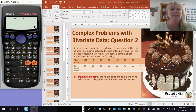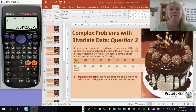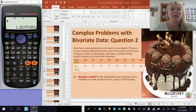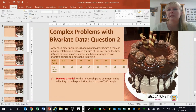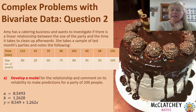I can clear that out now with the orange button. Click over to the shift button — number one is my statistics function. Option five tells me all I need to know to work out the model. I've got a equals approximately 8.55. Back to shift one, option five, option two, and I found the value for b: 1.26. So my equation is y = 8.549 + 1.262x. And now I've found the model.